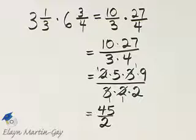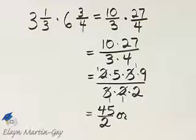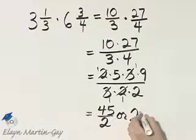Now, since I started with mixed numbers in our original product, let's go ahead and write this equivalently as a mixed number. 2 divides into 45 22 times, because I know 22 times 2 is 44.